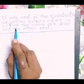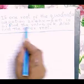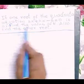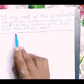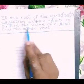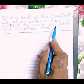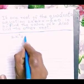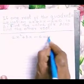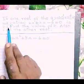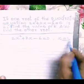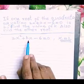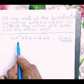Now another type of question. If one root of the quadratic equation 2x² + kx - 6 = 0 is 2, find the value of k. Also find the other root. We need to find the value of the unknown k. Since x = 2 is a root, we substitute x = 2 in the given equation.